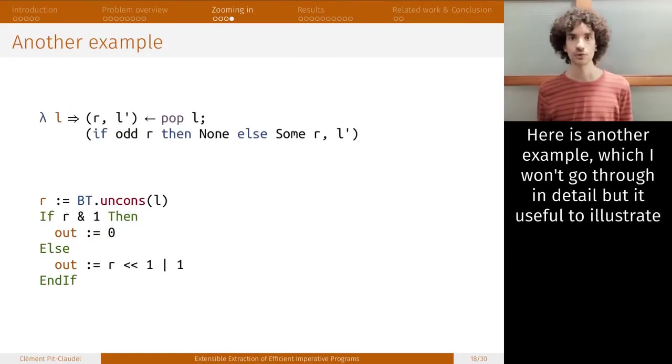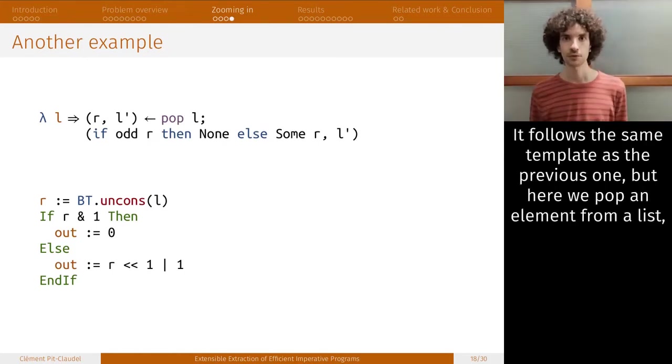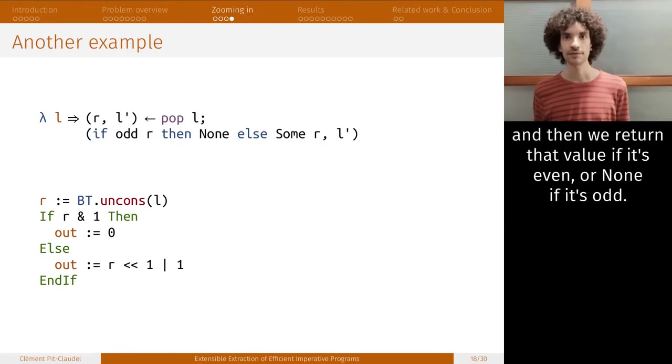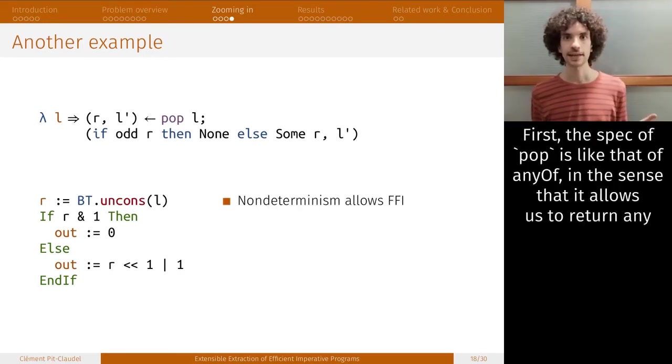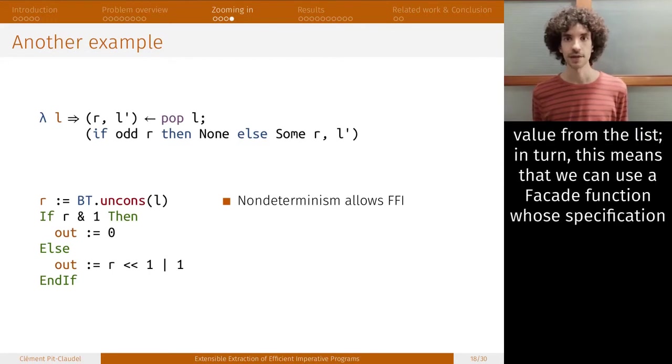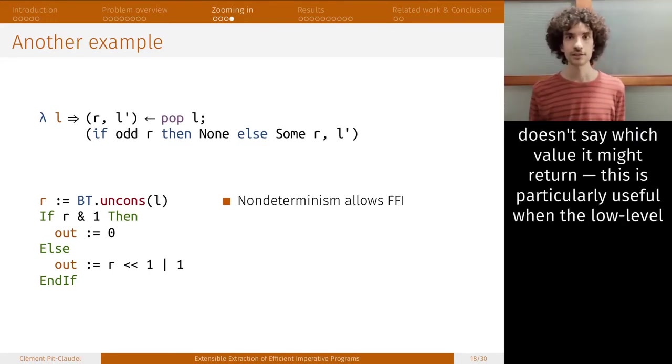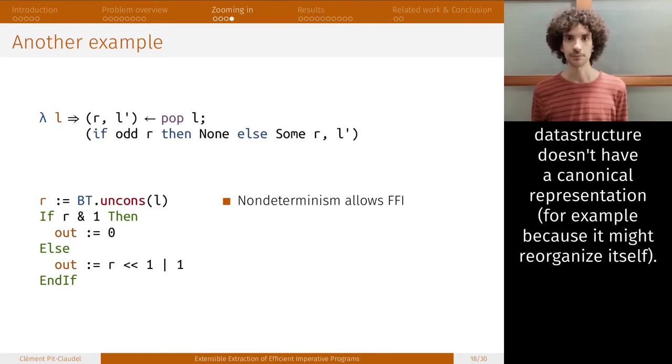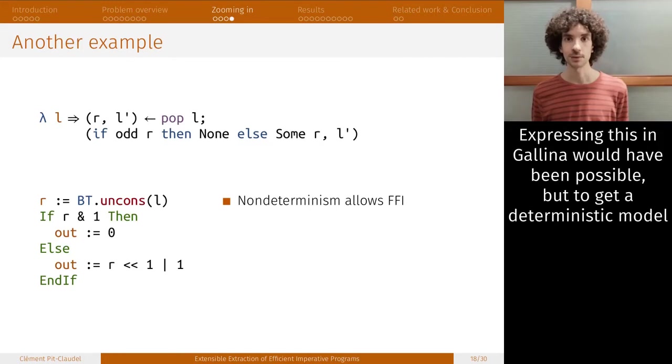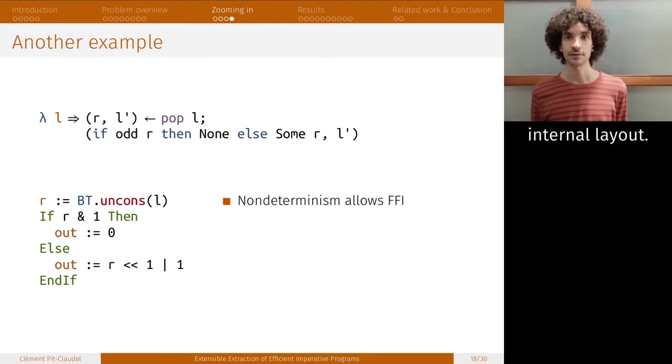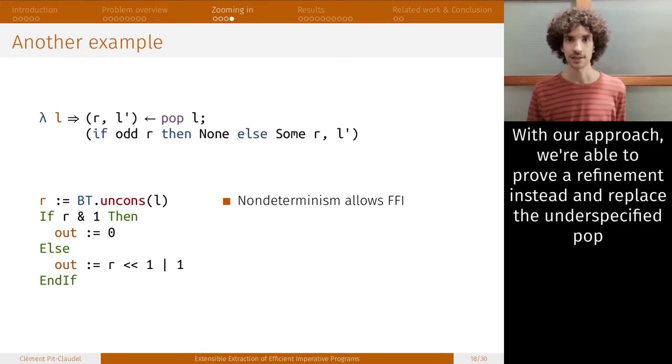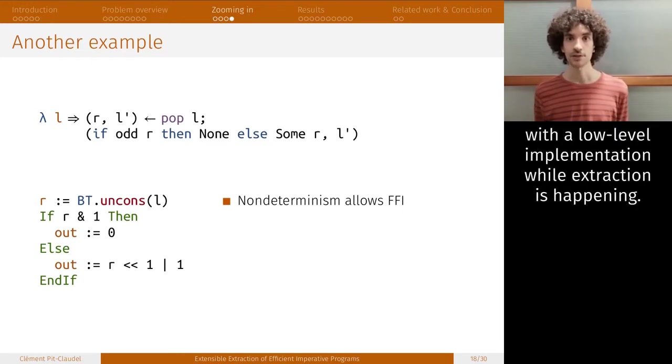Here's another example, which I won't go through in as much detail, but is useful to illustrate a few more tricks. It follows the same template as the previous one for clarity, but here we pop an element from a list, and then we return that value if it's even, and none if it's odd. Three interesting things happen. First, the spec of pop is like that of anyoff, in the sense that it allows us to return any value from the list. In turn, this means that we can use a facade function, whose specification doesn't say which value it might return. This is particularly useful when the low-level data structure doesn't have a canonical representation, for example, because it might reorganize itself. Expressing this in Galena would have been possible, but to get to sufficiently deterministic levels, we'd have to encode all the details of its internal layout. With our approach, we're able to prove a refinement instead, and replace the underspecified pop with the low-level implementation while extraction is happening.